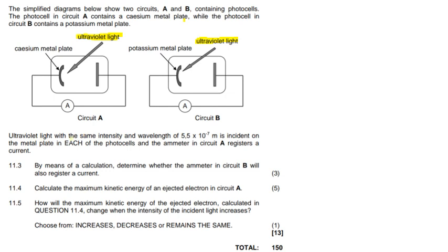Now they say that ultraviolet light with the same intensity and a wavelength of 5.5 times 10 to the exponent negative 7 meters is incident on the metal plate. We then told that the ammeter in circuit A registers a current.